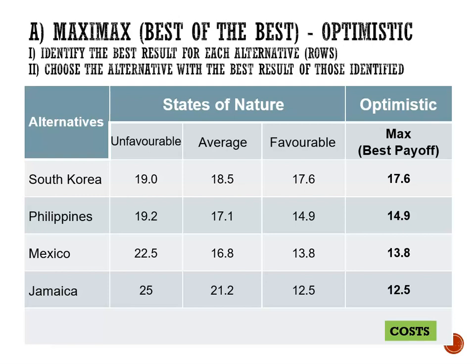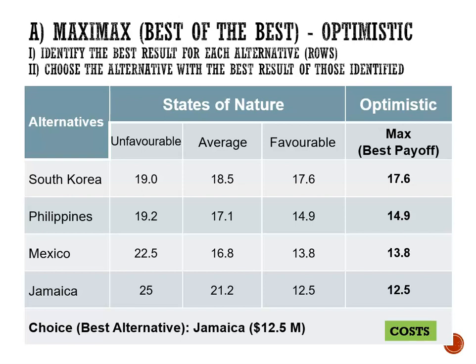We've now simplified the table to a single cost per location: South Korea at 17.6 million, Philippines at 14.9 million, Mexico at 13.8 million, or Jamaica at 12.5 million. Of those choices, the best possible choice is Jamaica at 12.5 million. So using Maximax, our selection would be Jamaica, based on the lowest cost of 12.5 million.